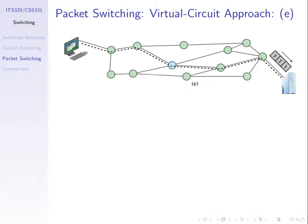The problem with virtual circuit packet switching compared to datagram is that it's more complex. We need to set up a connection at the start, and switches along the path need to store information in memory about that connection. In a large network with millions or tens of millions of connections, and hundreds of thousands of people sending data, setting up all these connections in advance takes a lot of resources.